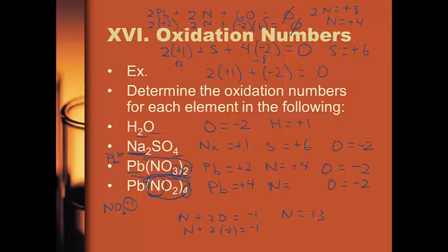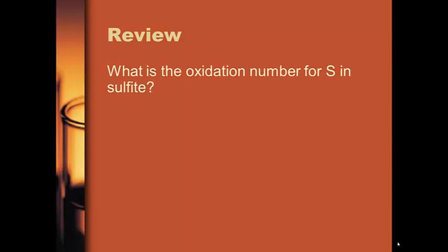Your review question for today: what is the oxidation number for sulfur in sulfite, which is a polyatomic ion? The choices are: +4, +6, −2, 0, or −8.